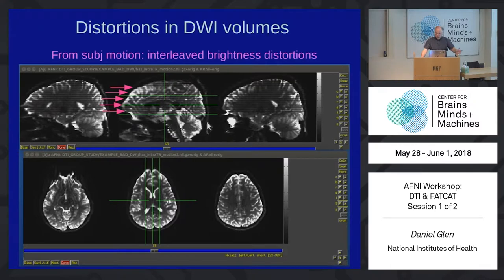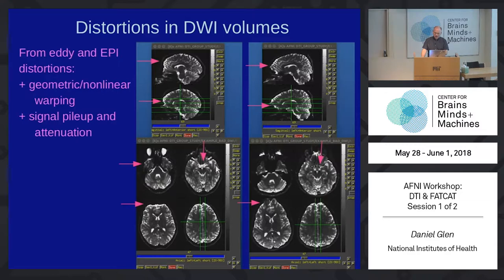Here is what motion looks like in diffusion-weighted images. You have interleaved brightness — it may look fine within plane, but outside the plane you'll have this kind of striping pattern. Like what we saw with the blip-up/blip-down in fMRI, we have that same kind of signal pileup and attenuation, so it could be larger or smaller in one direction than another. We can handle that in a similar way.